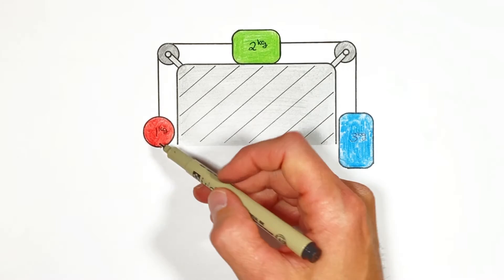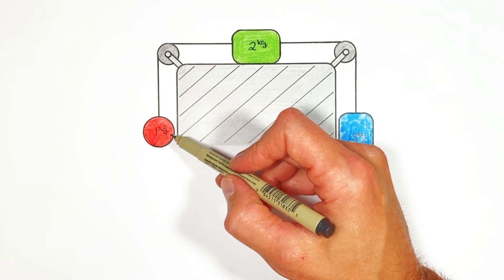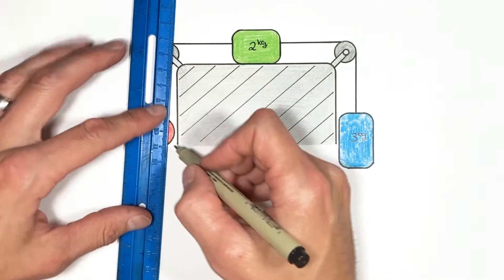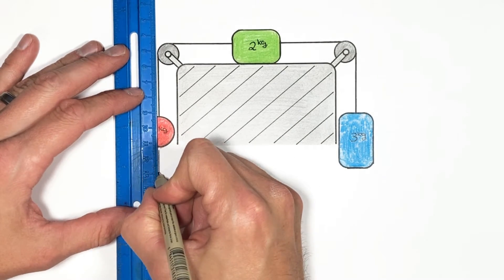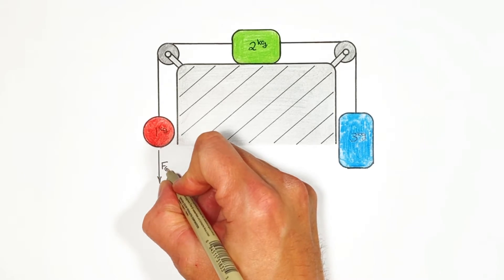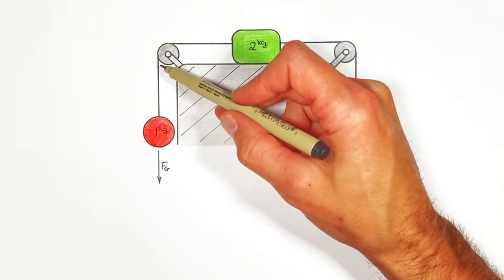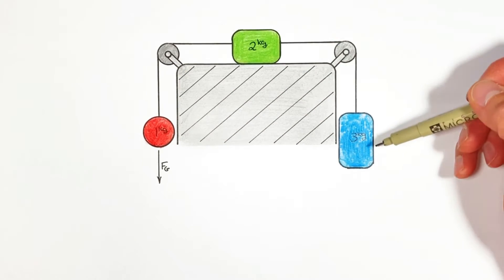So the first thing we're going to do is apply Newton's second law to this one kilogram block right here. Now before we just start slapping numbers into Newton's second law for this ball right here, what I want to do is go through and show all the forces which are acting on this ball. The first being gravity.